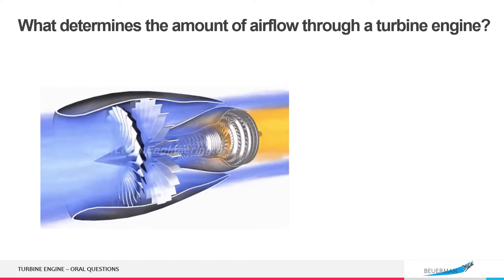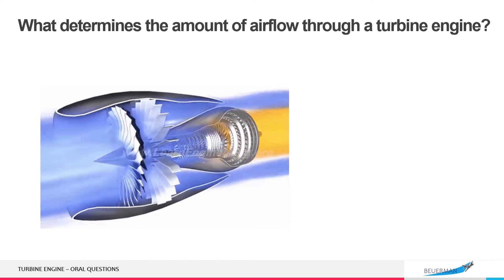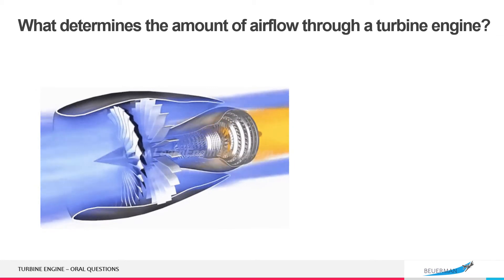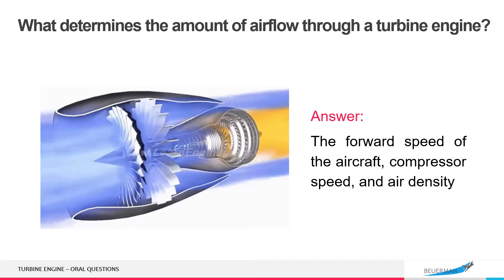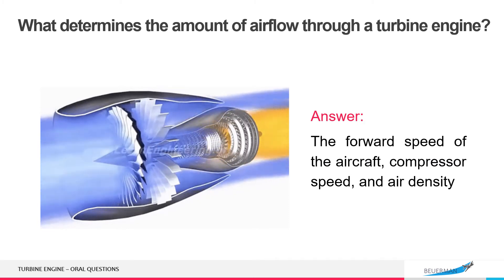What determines the amount of air flow through a turbine engine? The forward speed of the aircraft, compressor speed, and air density.